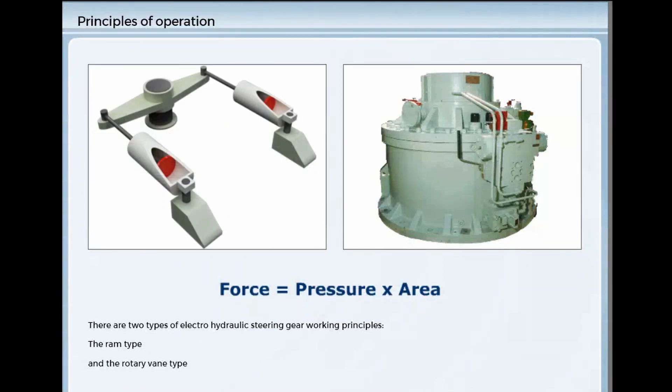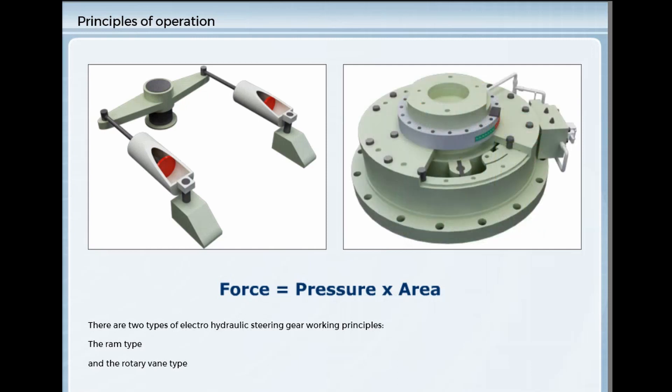In the ram type, the chamber is formed by rams or pistons in a cylinder. In the rotary vane type, each pressure chamber is formed between a fixed and moving vane.